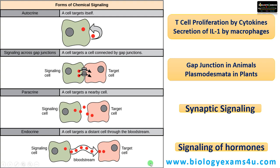Hope you understand the four types of cell signaling. In the next video we will be discussing six types of signaling molecules. If you find this video useful, please consider subscribing to our channel. Thank you so much. You are with Biologics Sums for It dot com.